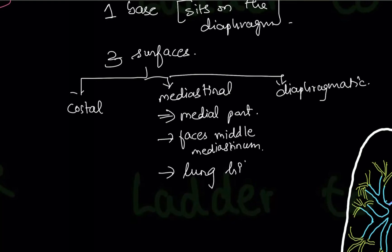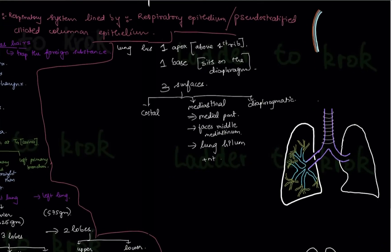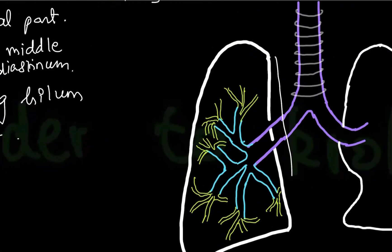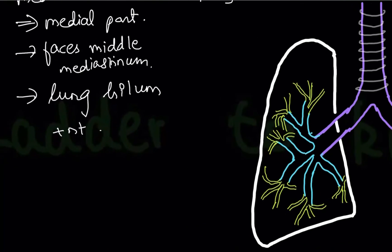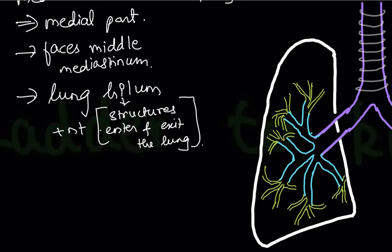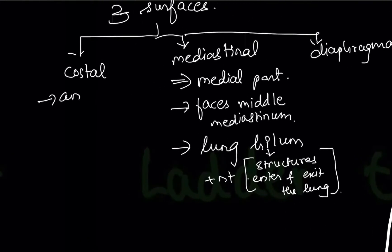On the medial side of the lung, the lung hilum is present. The hilum is a place where structures enter and exit an organ — it is the gateway. From the hilum, all structures that need to enter or exit the lung are present. The costal surface is the anterior surface, and the diaphragmatic surface is the base surface where the lung sits on the diaphragm.